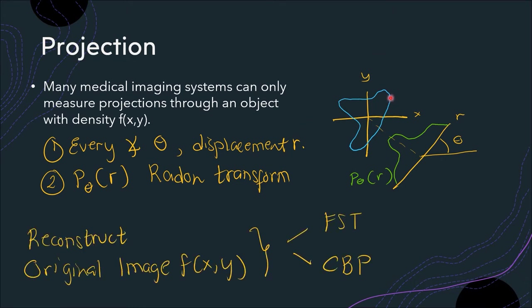The object can have varying values of attenuation coefficient, and therefore we will have a certain profile collected based on those attenuated photons. The objective of this reconstruction is to reverse the process — we want to reconstruct the original image, the function f. We can do this by first using the Fourier slice theorem, or direct reconstruction using the Fourier slice theorem, and second, using the convolution back projection.